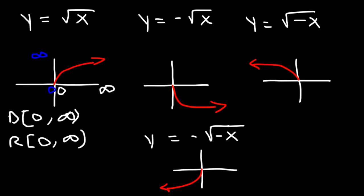If you have a difficult time remembering all these rules, here's something that can help you. The sign in front of x is positive and the sign in front of the radical, which is associated with y, is also positive. x is positive in quadrants 1 and 4, y is positive in quadrants 1 and 2, and x and y are both positive in quadrant 1. So the graph points towards quadrant 1.